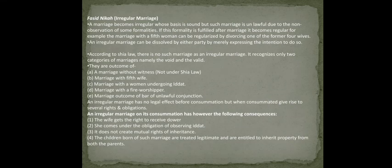The third kind of marriage is irregular marriage, known as Fasid. This is a marriage whose basis is sound but which is unlawful due to the non-observance of some formalities. If those formalities are later fulfilled, the marriage becomes regular. For example, a marriage with a fifth wife can be regularized by divorcing one of the former four wives. Under Sunni law, the fifth marriage is irregular until one of the four wives is divorced.